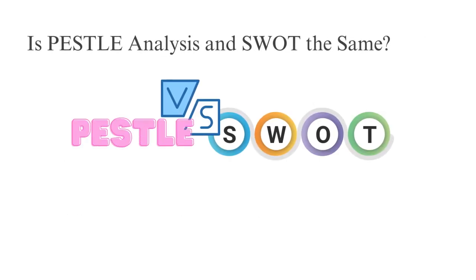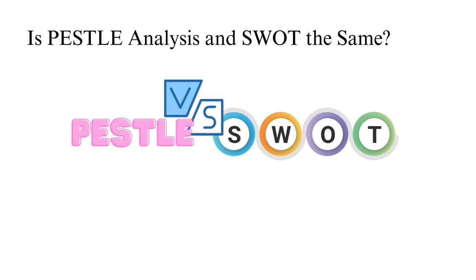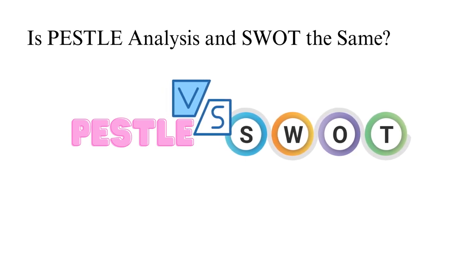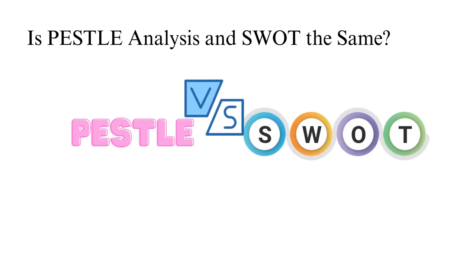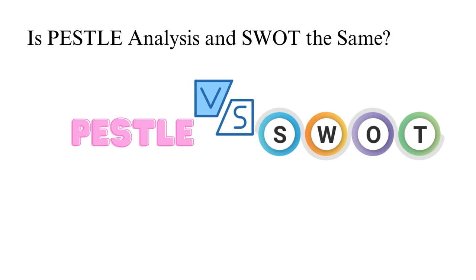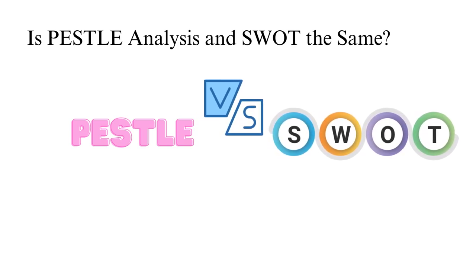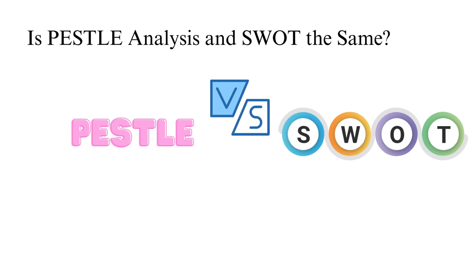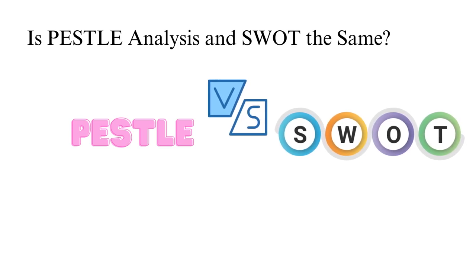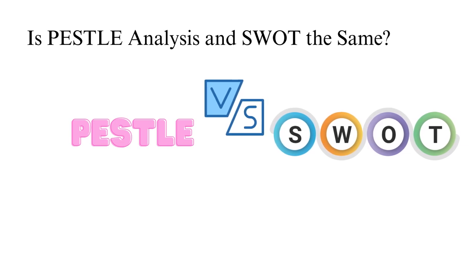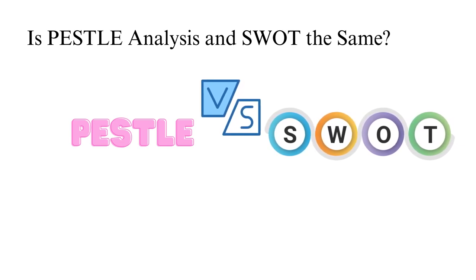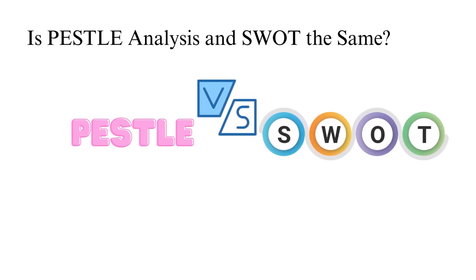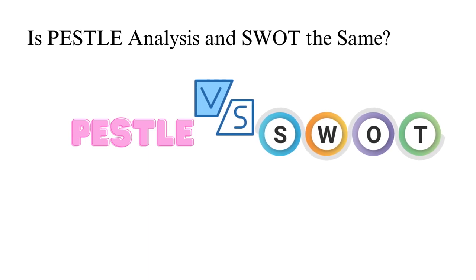Is PESTLE analysis and SWOT the same? These tools are not the same, but they are both essential in developing a strategic plan for your business. You can use them separately, but they are more effective when combined. PESTLE analysis deals with the broad environmental scope of the business and the changes that occur within. In contrast, SWOT interprets the findings to determine the business's strengths, weaknesses, opportunities, and threats. If you need to combine them, start with the PESTLE analysis and finalise with the SWOT analysis. SWOT aids in interpreting PESTLE and starting a risk management process.